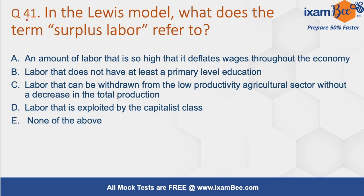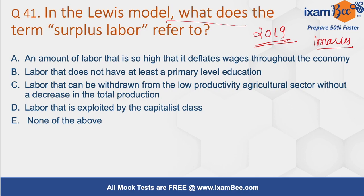Question number 41: In the Lewis model, what does the term surplus labour refer to? This is a very important model and the question was asked in 2019 for one mark. In the Lewis model, surplus labour means the existence of a huge labour population in the agriculture sector, which leads to lower or zero marginal productivity. If we remove that labour from the agriculture sector, it will not lead to a decline in total production.